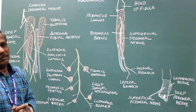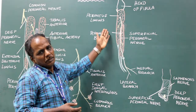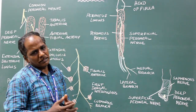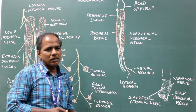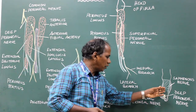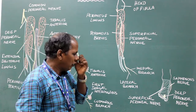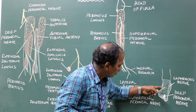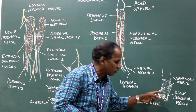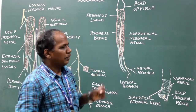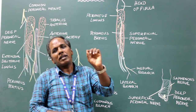Regarding branches and distribution: the superficial peroneal nerve gives muscular branches to peroneus longus and peroneus brevis. The medial and lateral branches supply the skin over the dorsum of the foot, except the areas supplied by the saphenous nerve, the sural nerve, and the deep peroneal nerve. It also supplies the skin over the lower one-third of the lateral surface of the leg.